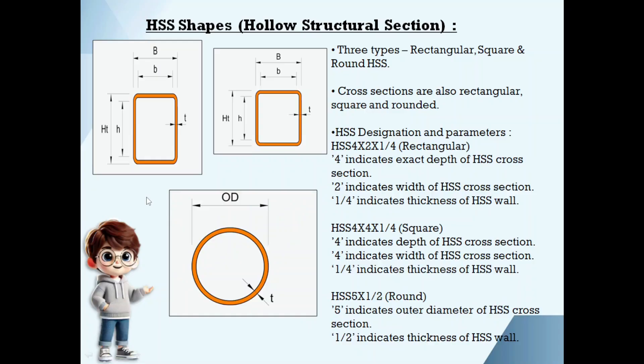HSS shapes. Hollow structural section. These are of three types: rectangular, square, and circular. If you take HSS 4 by 2 by 1/4, 4 inch is the depth of HSS cross section, 2 inch is the width of HSS cross section, 1/4 is the HSS wall thickness. If you take 4 by 4 by 1/4, 4 inch is the depth and width of HSS cross section, 1/4 is the HSS wall thickness. If you take a round HSS, HSS 5 by 1/2, 5 indicates the outer diameter of HSS, 1/2 is the thickness of HSS wall.